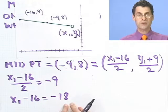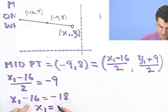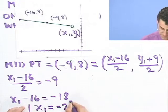If I now add 16 to both sides, I see that x1 must be equal to, let's see, what would it be? It looks like negative 2. So that's negative 2.